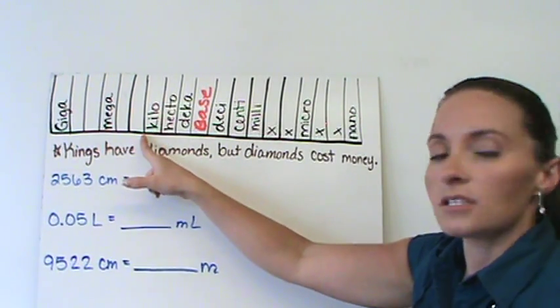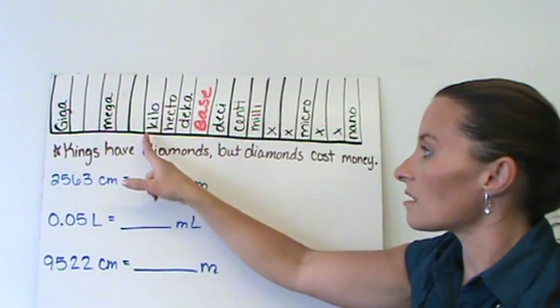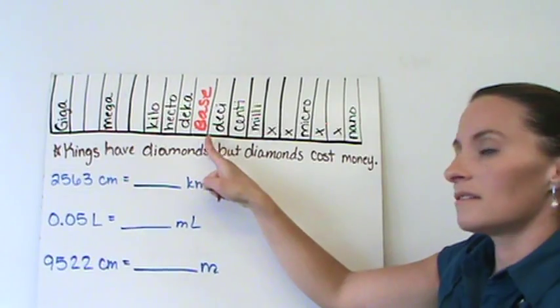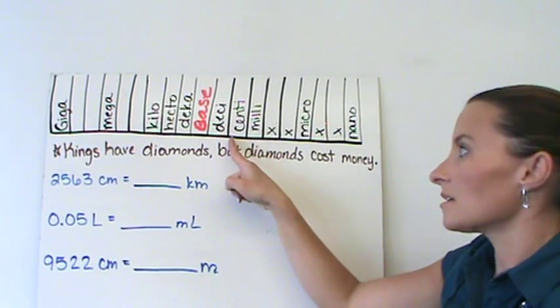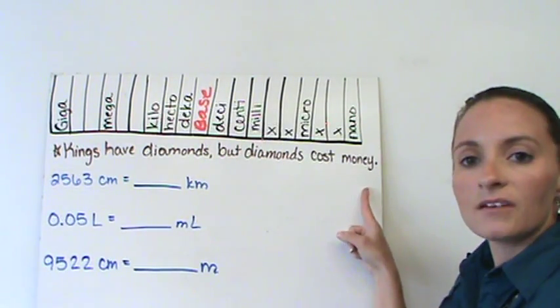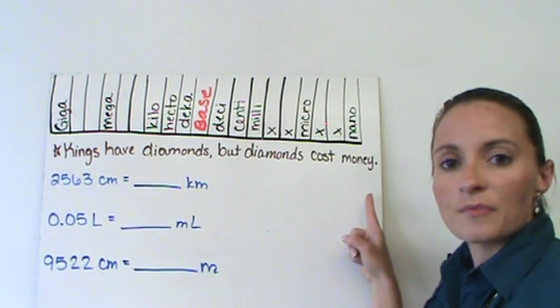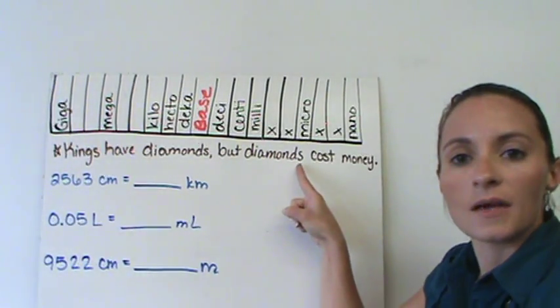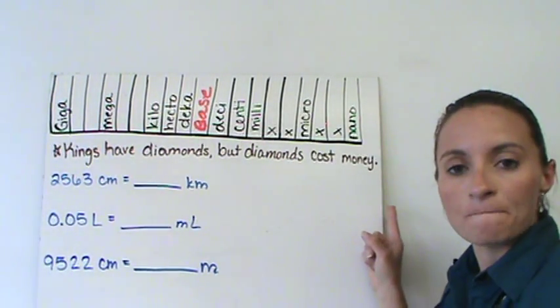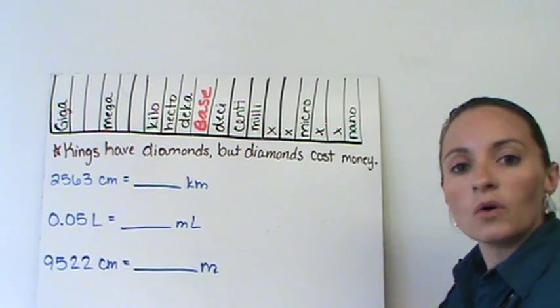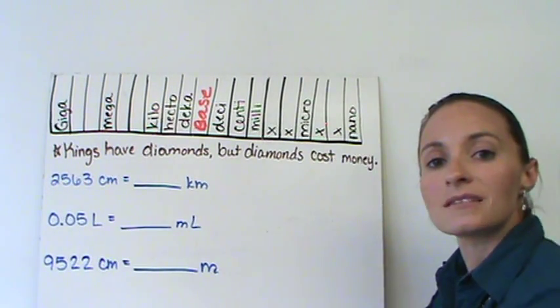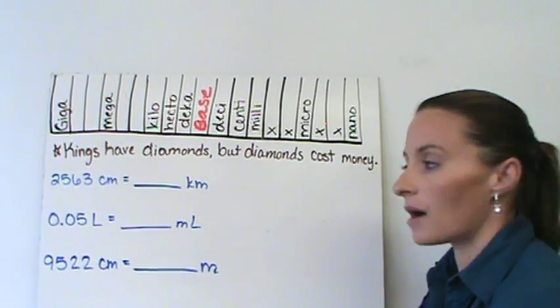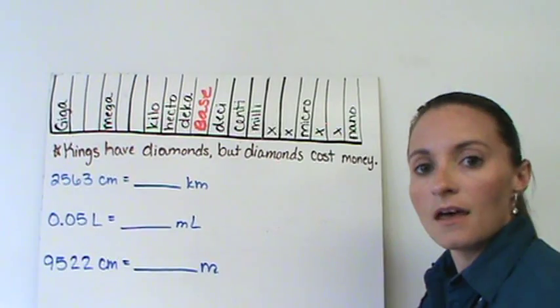You are going to need to know the major pieces: kilo, hecto, deca, base, deci, centi, and milli. I've given you a mnemonic device here to try to remember those - Kings have diamonds, but diamonds cost money. If you can remember the mnemonic device, hopefully it can help you remember how many steps you have to move when you're transferring from one unit to the next.